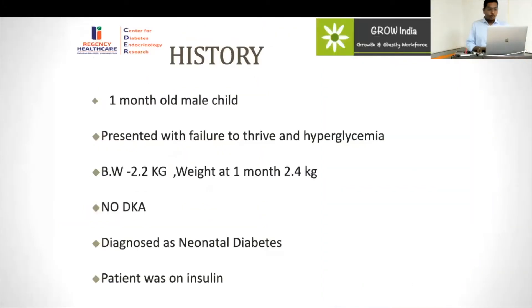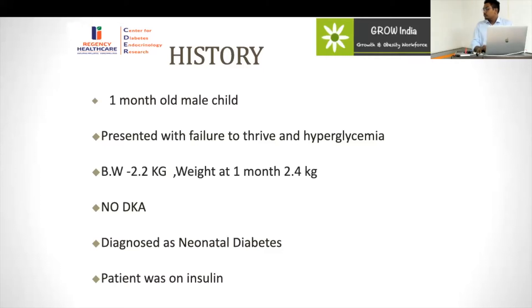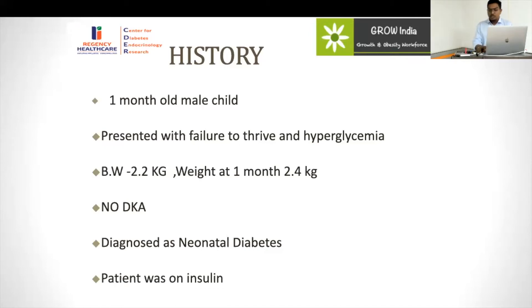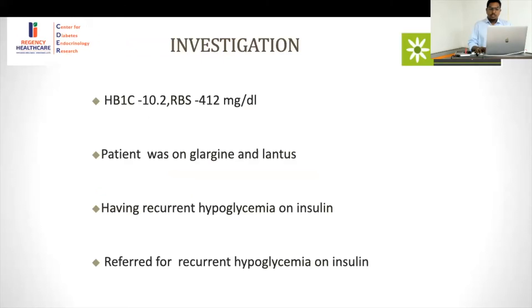Case 5: a one-month-old male child presented with failure to thrive and hyperglycemia for three consecutive days. Birth weight was 2.2 kg; at one month, weight was 2.4 kg — failure to thrive. The patient had no DKA and was started on insulin. Diabetes onset around one month of age without DKA is more likely to be a permanent form, since transient neonatal diabetes tends to present in the first week of life with more severe symptoms and DKA.